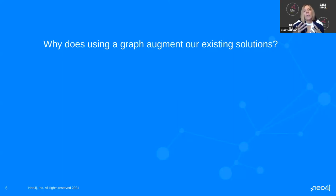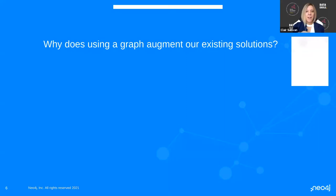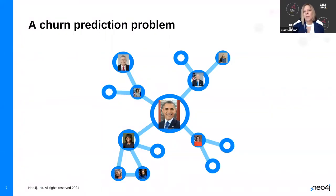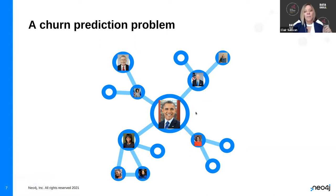So why would I want to use a graph? Why might it help? I'm going to talk you through two different problems common within data science. First, a churn prediction problem in social media. I've created a fictitious social network around Barack Obama. You can see Barack Obama is connected to several different people — Michelle Obama, who is connected to Sasha and Malia; Joe Biden; and through Elaine Chao to Mitch McConnell; Nancy Pelosi.